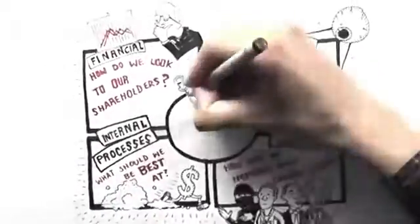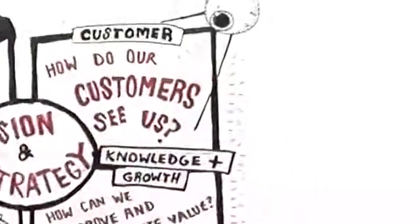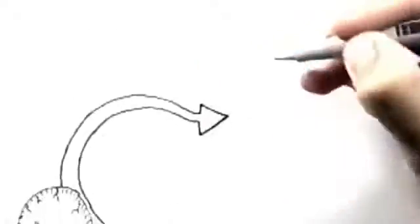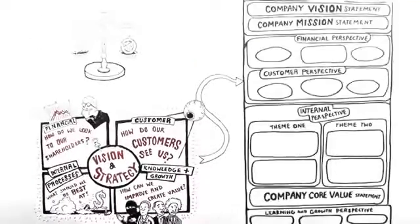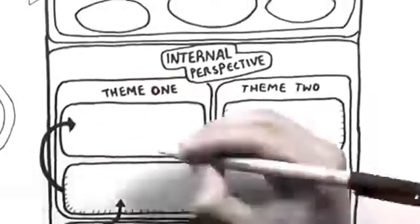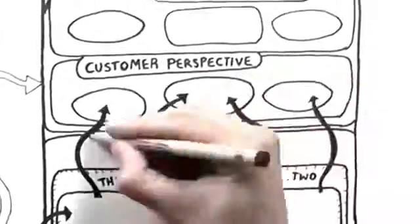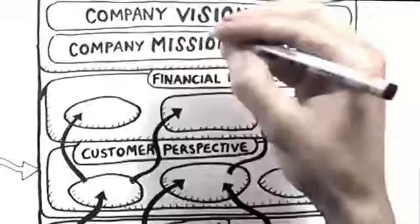The perspectives map out the company vision and strategy. This in turn can lead to the creation of a formal strategy map, that is, the company strategy stated in simple terms in an easy-to-understand form based on the four Balanced Scorecard perspectives.